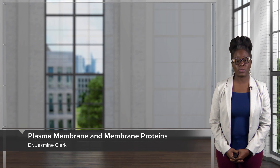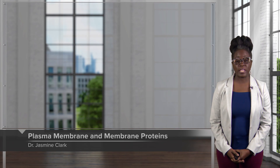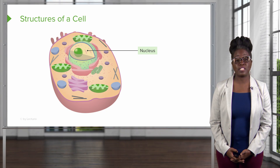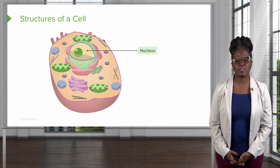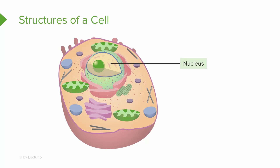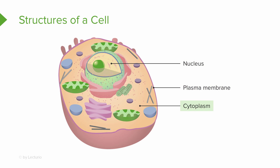Today we will discuss the cellular level of organization, which is the basic functional unit of our human body. In this lecture, we will discuss the different structures of the cell. This can be divided into three different subdivisions: the nucleus of the cell, the plasma membrane of the cell, and the cytoplasm of the cell.